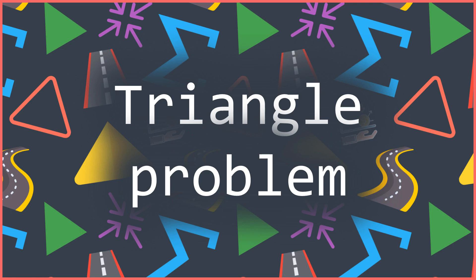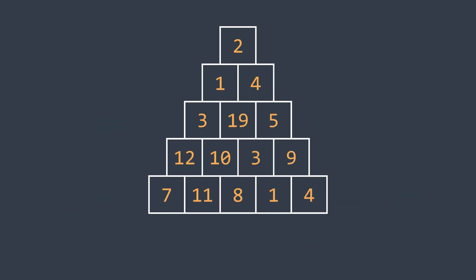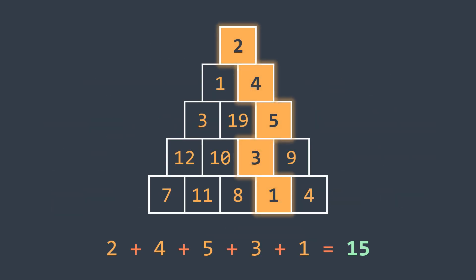What does the problem say? Given a triangle represented by a 2D array, create a function that returns the minimum path sum to go from the top to bottom. For example, if we have this triangle, the minimum path sum is 15, which we can get by taking this particular path.